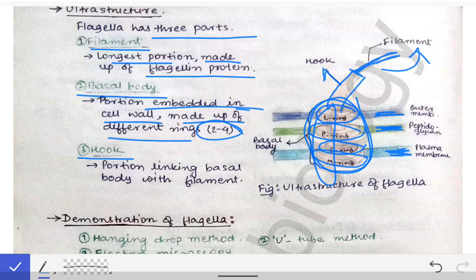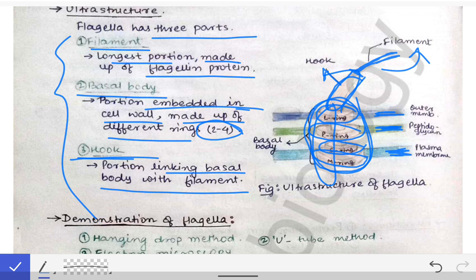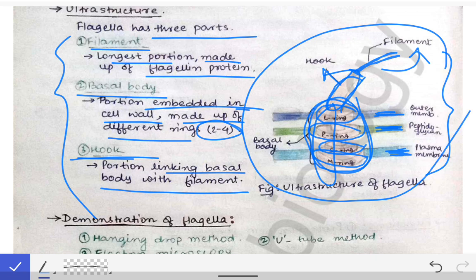The hook portion is that portion which links the basal body with the filament. This is the ultrastructure of the flagella. You must practice this diagram and whenever asked, you must draw the diagram in the examination as well.